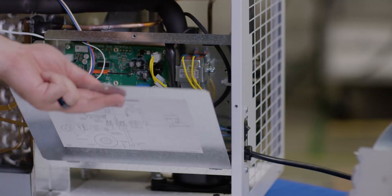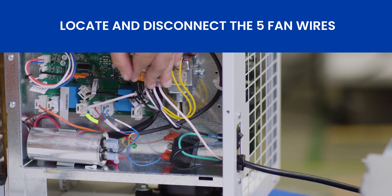Next we'll remove the circuit panel cover so we can disconnect the fan wires. There are five wires in total that we need to remove including two plugs, two connectors, and a ground.